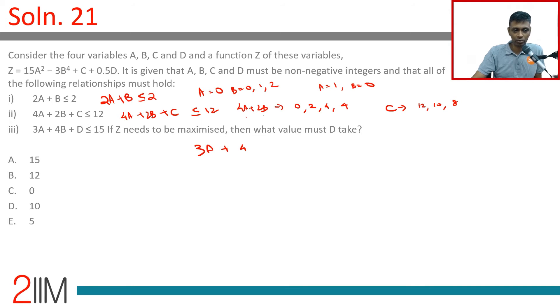3A + 4B + D ≤ 15. We can have as high as possible for A, B, C. C should be high, A should be high, B should be minimal.